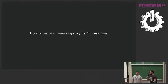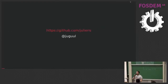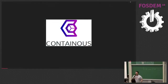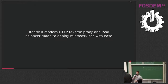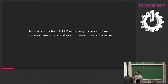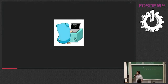Good morning, my name is Julian, I'm a Go developer. I work at Containous. Containous is the company behind an open source project named Traefik. Traefik is an open source reverse proxy made to deploy microservices with ease — it doesn't need any configuration file. It connects to your orchestrator API and refreshes its configuration dynamically by listening to orchestrator events and new containers. Today it makes sense to talk about how to write a reverse proxy.